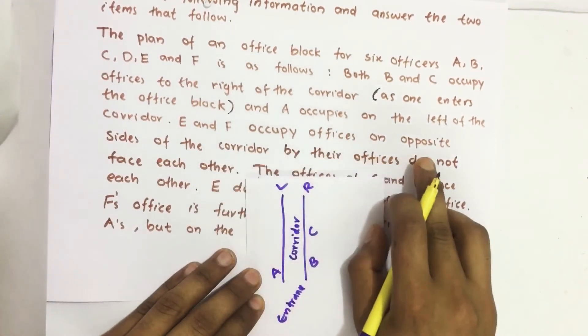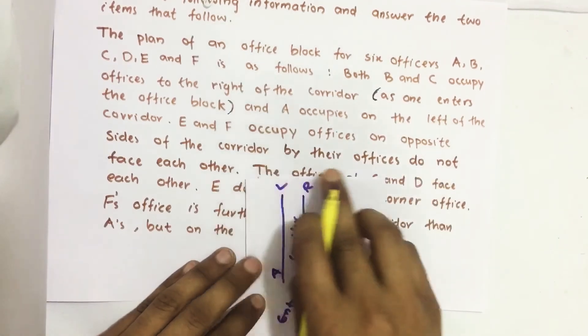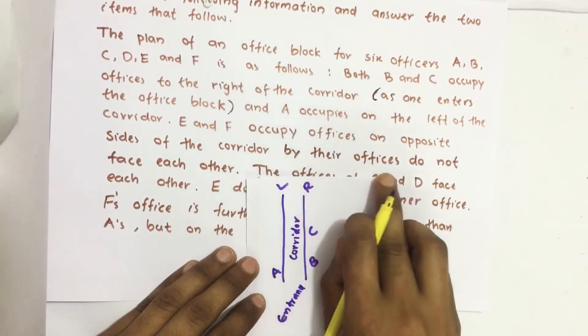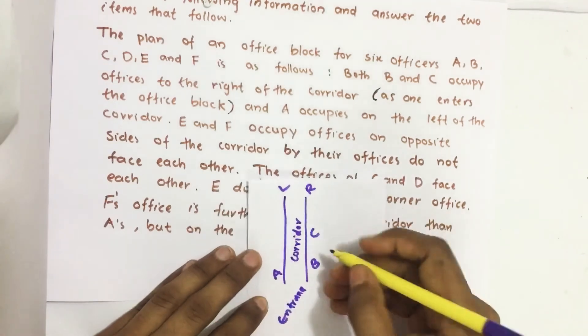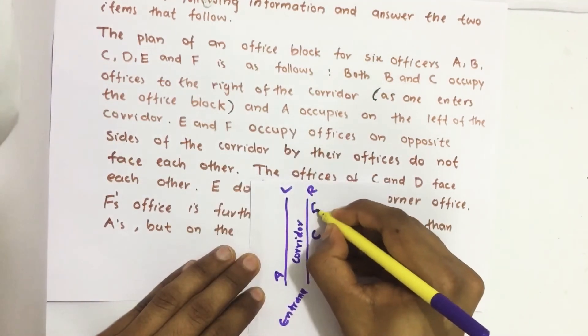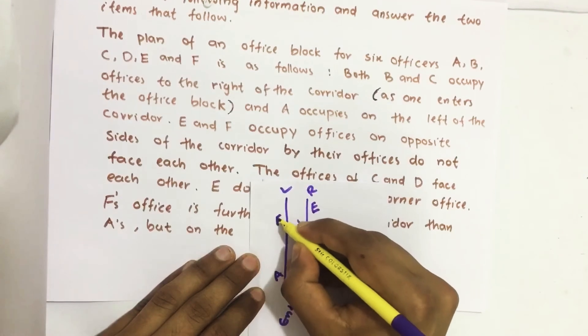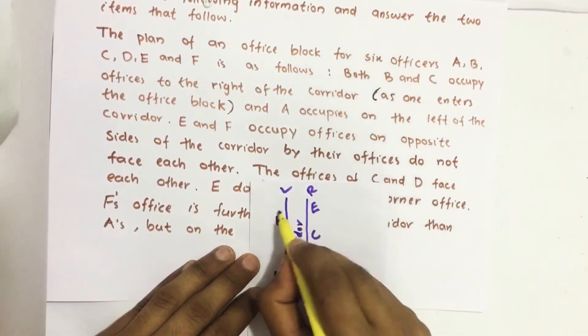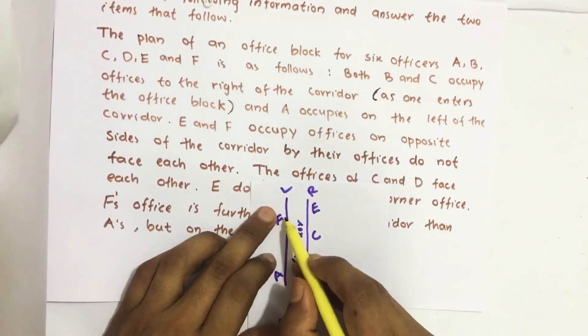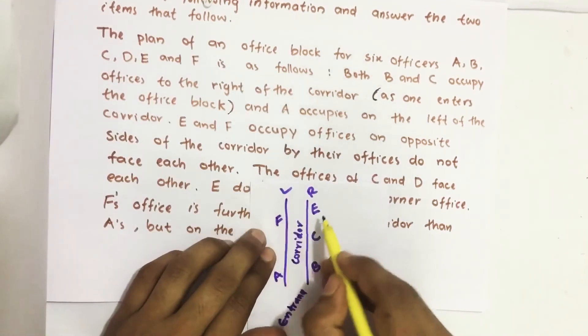E and F occupy offices on opposite sides of the corridor but their offices do not face each other. Suppose if E is here, F should not be on the opposite side of this E. That means any place other than this.